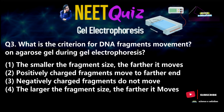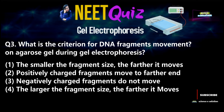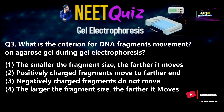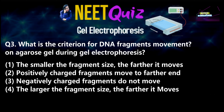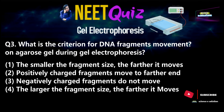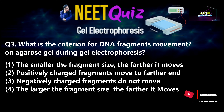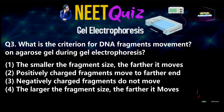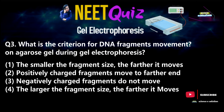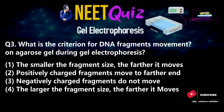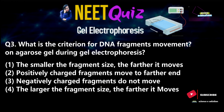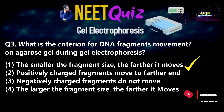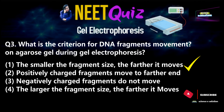Next question, which was also asked in 2017 — so we have two questions on this topic from 2017. What is the criterion for DNA fragment movement on agarose gel during gel electrophoresis? Option 1: The smaller the fragment size, the farther it moves. Option 2: Positively charged fragments move to the farther end. Option 3: Negatively charged fragments do not move. Option 4: The larger the fragment size, the farther it moves. The correct answer is option number one.